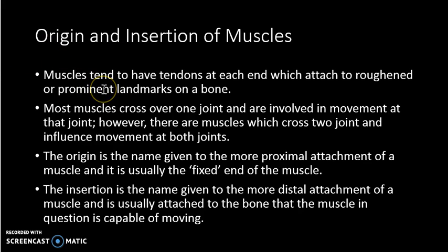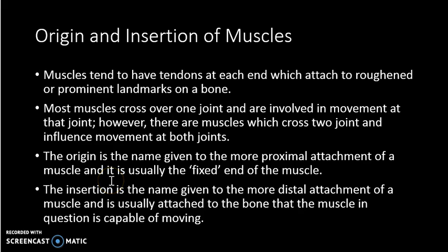Muscles have origins and insertions. The origin is the beginning of the muscle — the part closest to the proximal end of the bone it attaches to, or the most proximal part of the muscle closest to the midline of the body. The insertion is the more distal end, further from the midline. The origin tends to be the fixed end, while the insertion is the mobile end that moves when the muscle contracts. For example, the biceps has its origin up in the shoulder on the clavicle and scapula, and its insertion down on the radius and ulna — so contracting the bicep produces lower arm movement, not shoulder movement.